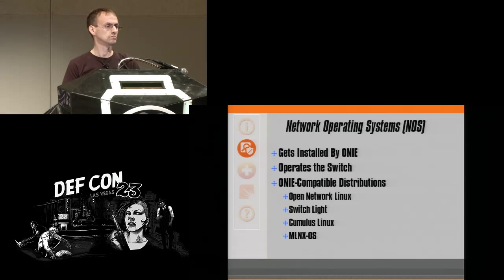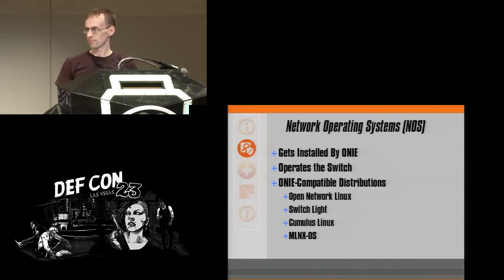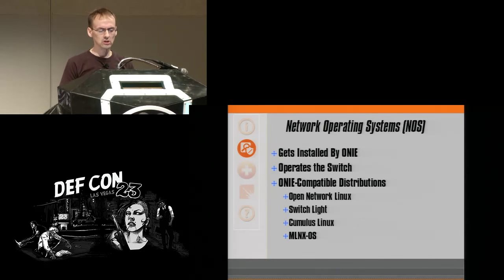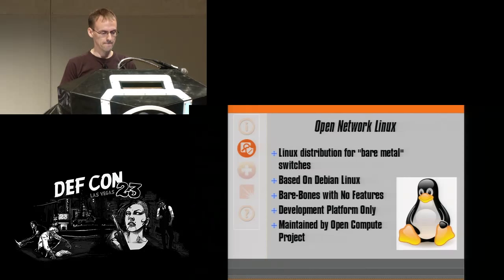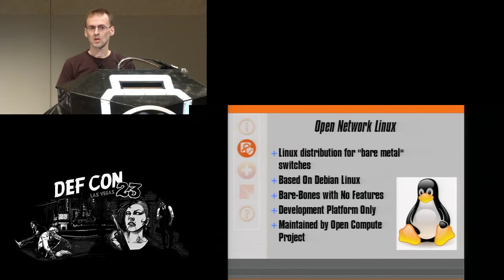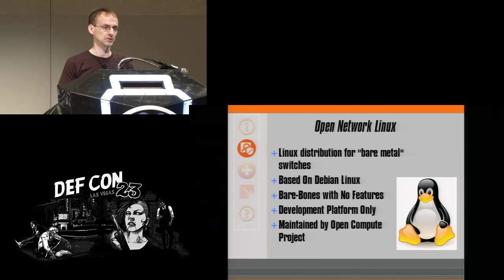Network operating systems are installed by ONIE and operate the switch to do all the packet forwarding and provide all the features you want to see in a switch. There are a lot of network operating systems, but only a handful with ONIE-compatible distributions. The number is growing — they just added a new one a couple months ago. When I started, there were only about four that were really prevalent. First is Open Network Linux. After that: Switch Light, Cumulus Linux, and ONOS. Open Network Linux is a Linux distribution for bare metal switches — bare bones with no features. It's a reference starter that the Open Compute Project came up with to help you develop your own network operating system compatible with ONIE.